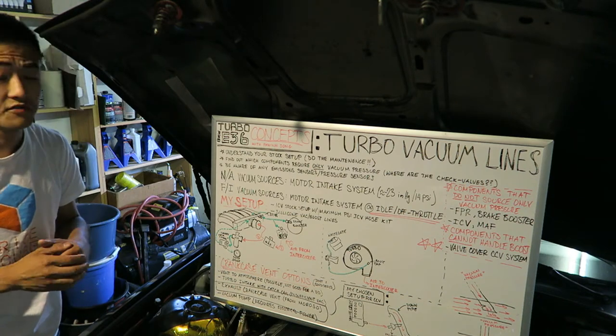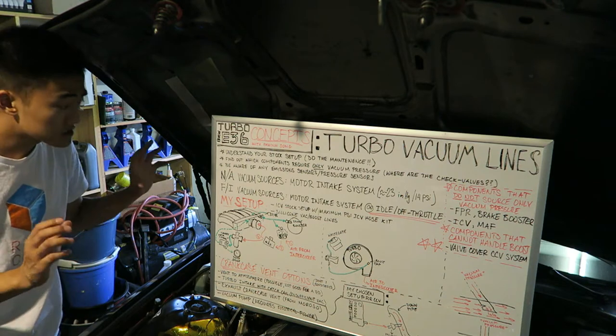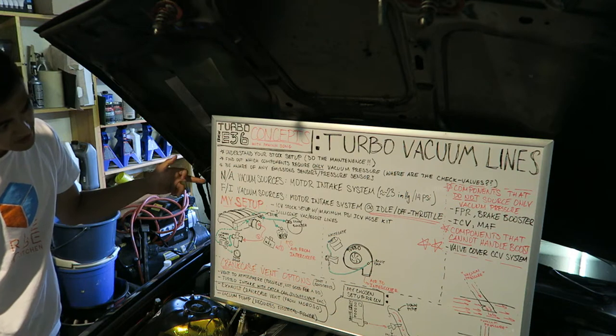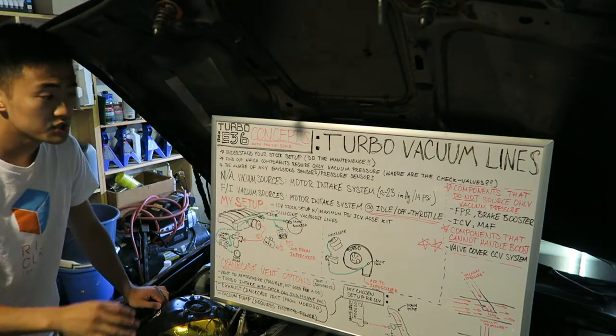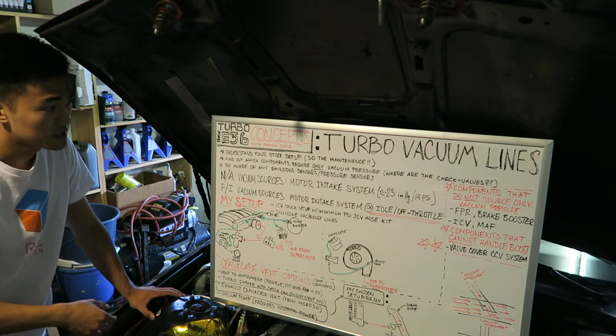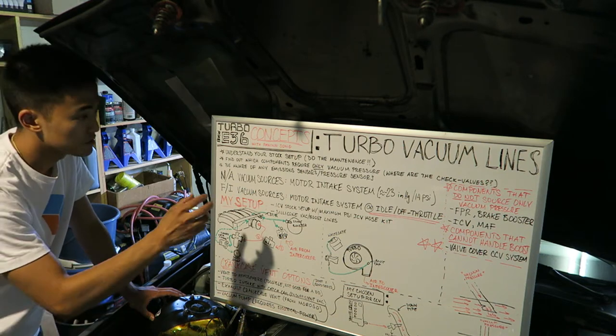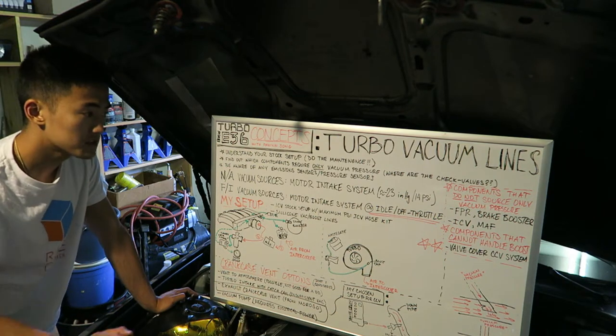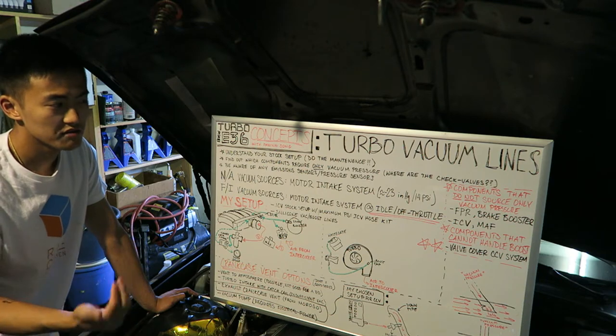The next thing to understand is the vacuum sources in a naturally aspirated car versus a forced induction car. This is oversimplified, but basically in a naturally aspirated vehicle the main point of intake vacuum pressure is from the actual intake system itself. In the initial downstroke of the piston, air is pulled in through the intake valves, and that creates a vacuum pressure. So if you have a full motor running at full tick, you'll notice that it's consistently in vacuum pressure. E36s typically have about 14 psi of vacuum pressure—anything lower than that, you have a vacuum leak somewhere.